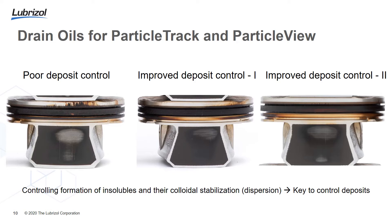The answer involves piston cleanliness. Looking at three pistons, each represents the deposit controllability of a different formulation in the same engine test — one has poor deposit control and two show improved deposit control. Controlling particle formation through antioxidants and base oil, and then dispersing and stabilizing formed particles through detergents and dispersants, are essential to control deposit formation. ParticleTrack and ParticleView can be used to study the state of dispersion in these highly contaminated oils.